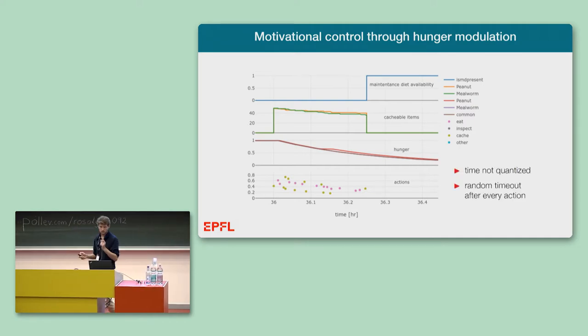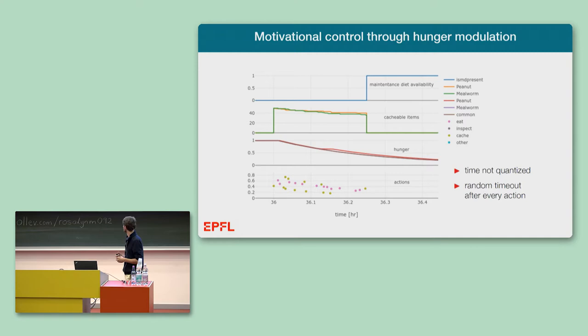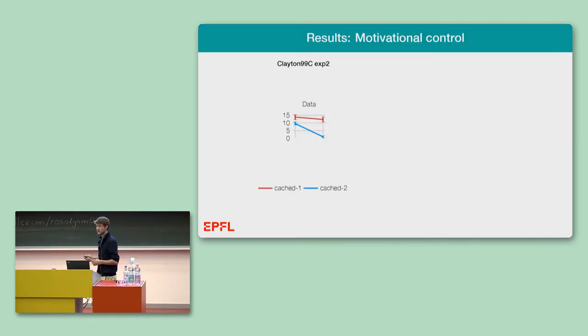And what you can see is that as a consequence of hunger modulation, the weight of the eat and cache actions decreases over time. We did not quantize time but instead introduced random timeouts after each action, integrated the hunger dynamics in continuous time, and like this we can really faithfully follow the timings given in the experimental protocols that the experimentalists chose.